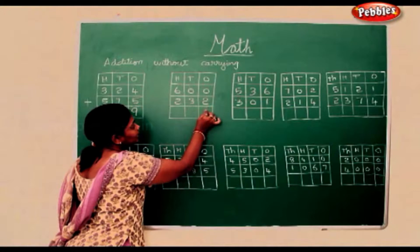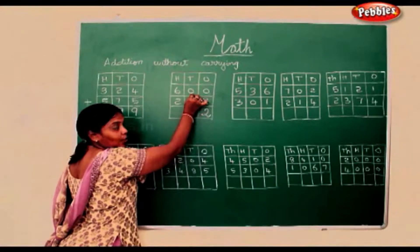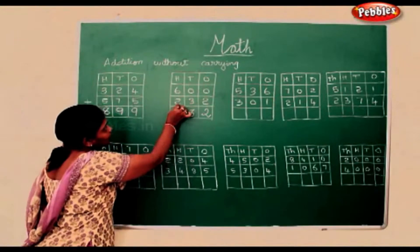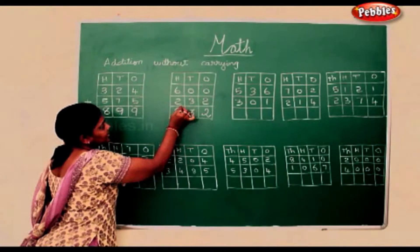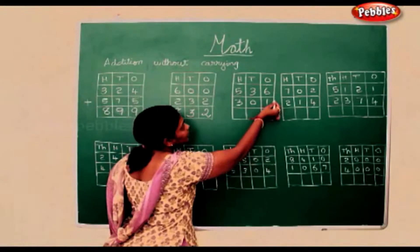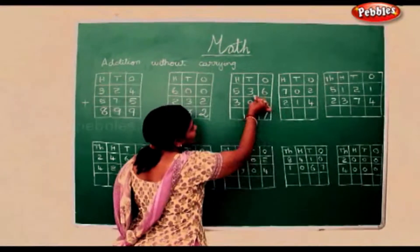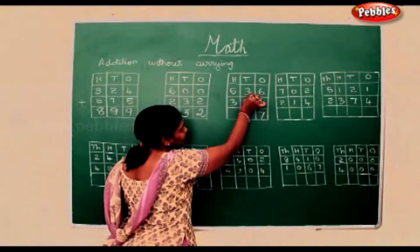So 0 add 2 will be 2, 0 add 3 will be 3, 6 add 2 will be 8. Now here in the sum 6 add 1 is 7. Again here 3 add 0 is the number itself, it will be 3.